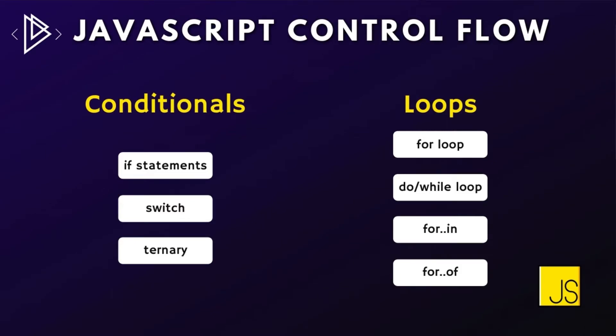For loops we have things such as for loops, which are the most common type of loop in JavaScript, do-while loops, for-in loops, and for-of loops. Over the next few lessons we're going to understand JavaScript control flow by taking each of these in detail. We'll start in the next lesson with if statements.